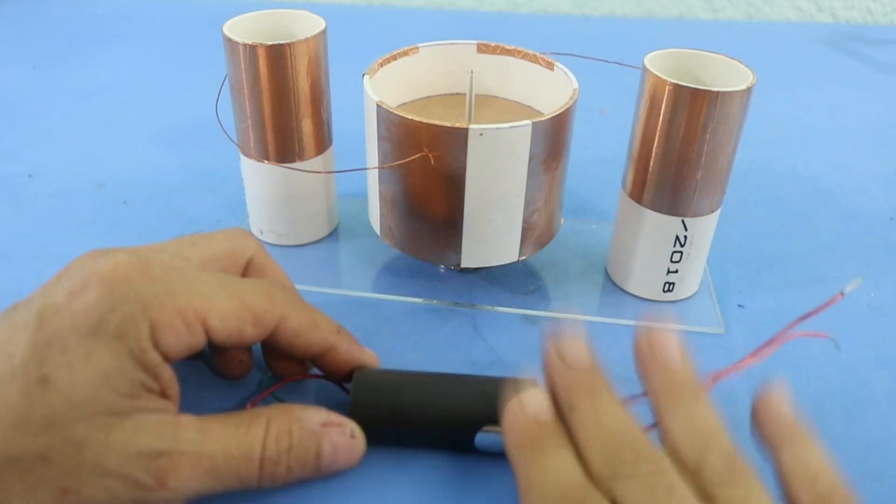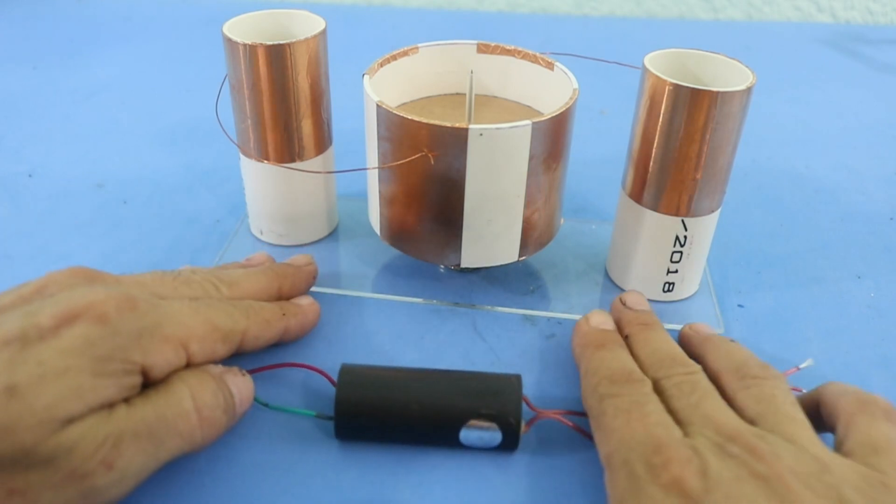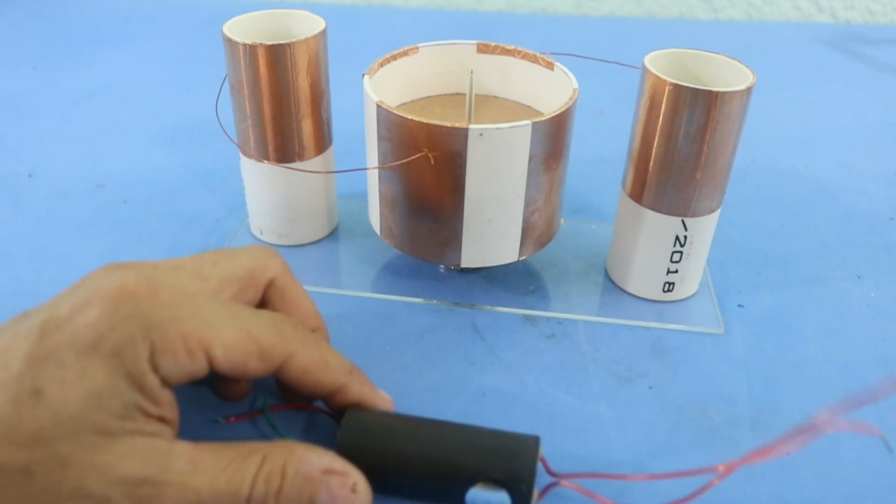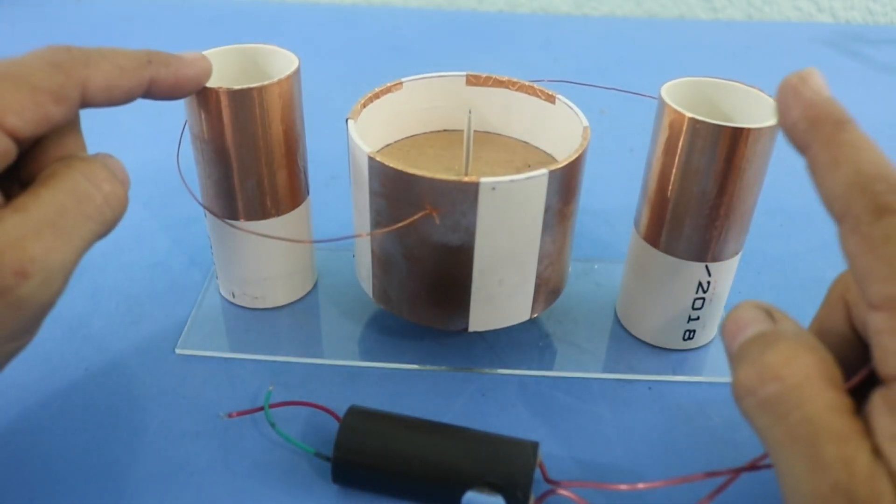And you need DC current for these motors. They will not work with AC. And you will connect the high voltage output to the two electrodes.